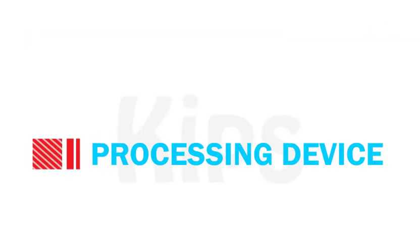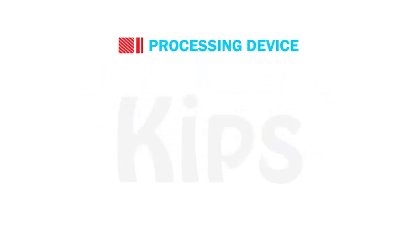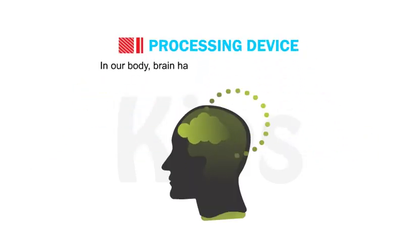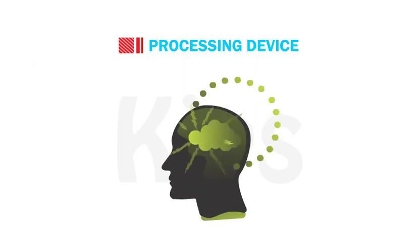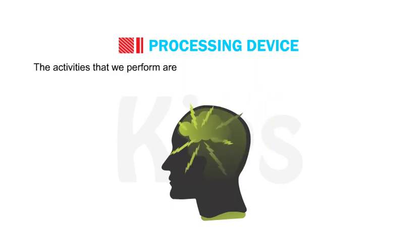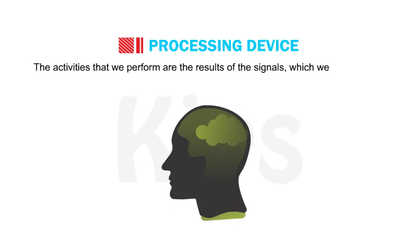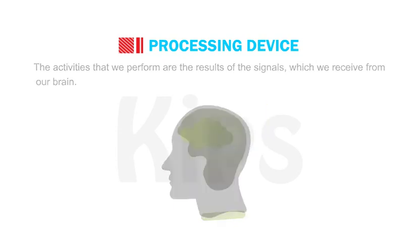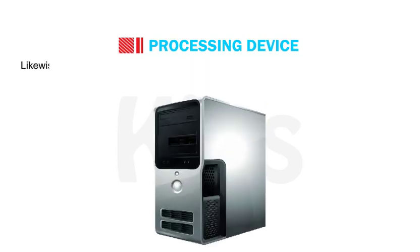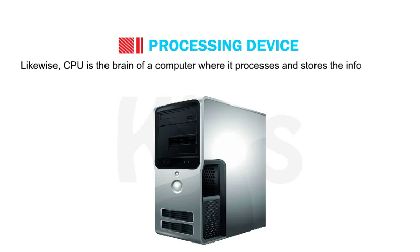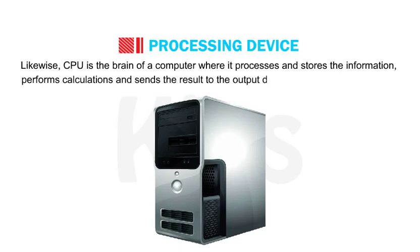Now we shall talk about the processing device. In our body, the brain has a very important role to play. The activities that we perform are the results of the signals which we receive from our brain. Likewise, the CPU is the brain of a computer where it processes and stores information, performs calculations and sends the result to the output devices.